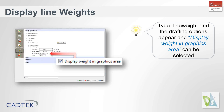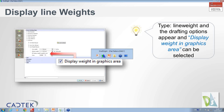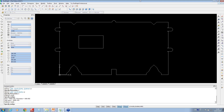The third icon we're going to look at is how you can display the line weights that you've assigned inside the layer properties manager actually into the graphics area. You'll notice they appear inside the drawing space, but inside the model space you won't necessarily see these. If we go back into the application, I'll just show you where this is.